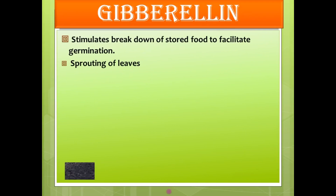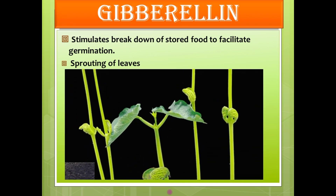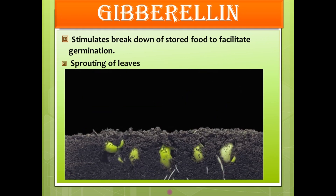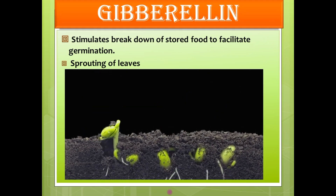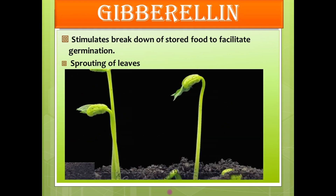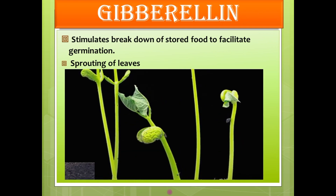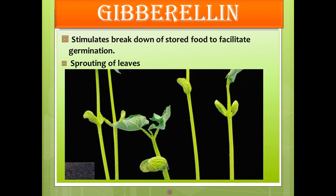The next one is gibberellin. Gibberellin helps to stimulate the breakdown of stored food to facilitate germination. It basically helps to germinate seeds and also helps to sprout leaves. Here you can see a clipping of sprouting of leaves as well as germination — germination enhanced with the help of gibberellin, and here also you can see the sprouting of new leaves.